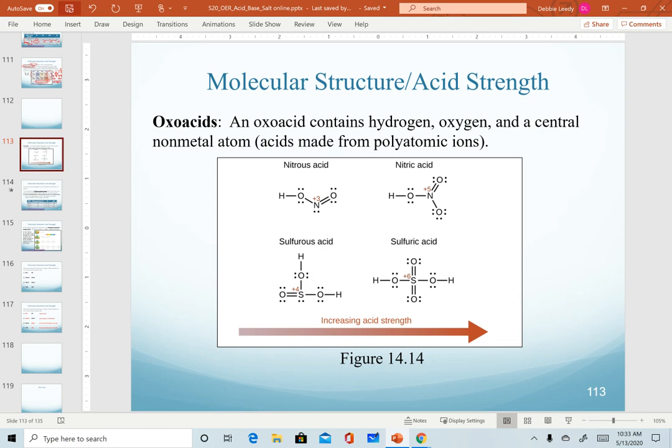For this video, we're describing the relative strengths of acids for our oxoacids. Oxoacids are ones made from our polyatomic ions. These acids will obviously contain hydrogen as the acid, our oxygens, and then some central nonmetal atom.